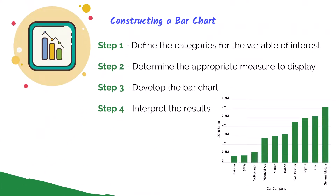Now, to construct our bar chart, in step one we want to define the categories for our variable of interest. In our example, the different categories are automobile companies. We also need to determine the appropriate measure to display — in this case, we want to display the number of cars sold in 2015. We're going to use Excel to develop this bar chart and then interpret the results.